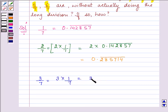So 3 into this value of 1/7 which is 0.142857 bar. And that is equal to 0.428571 bar.